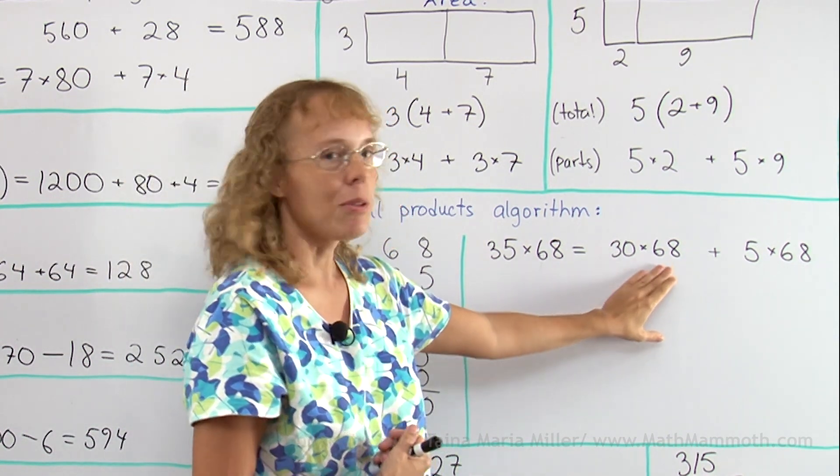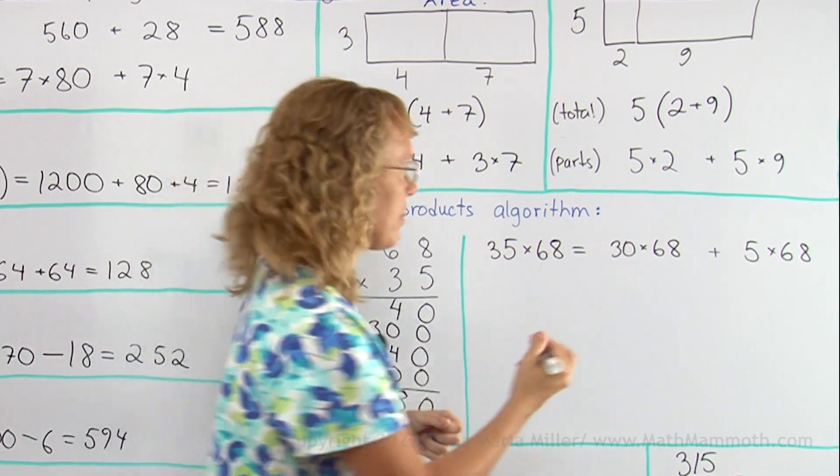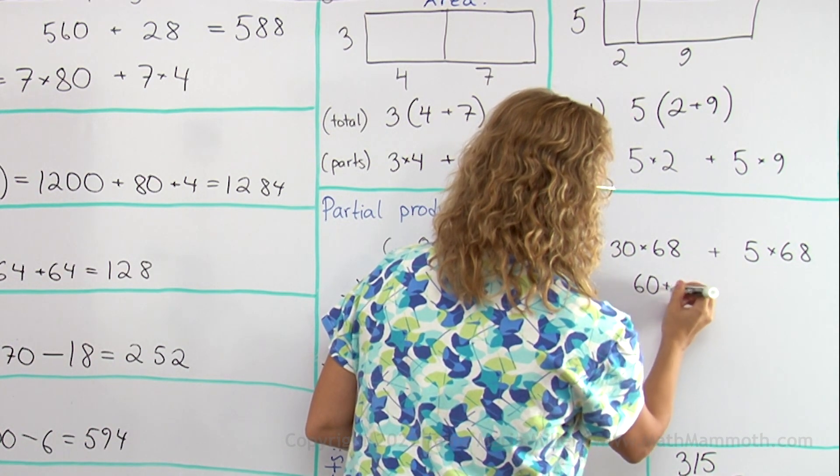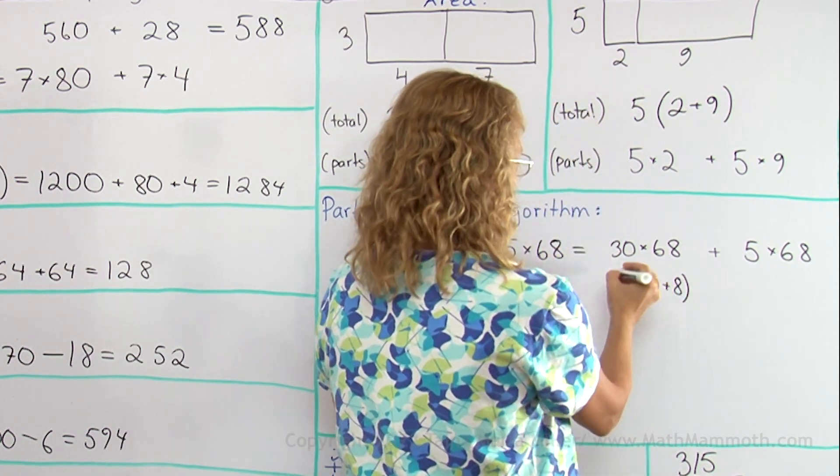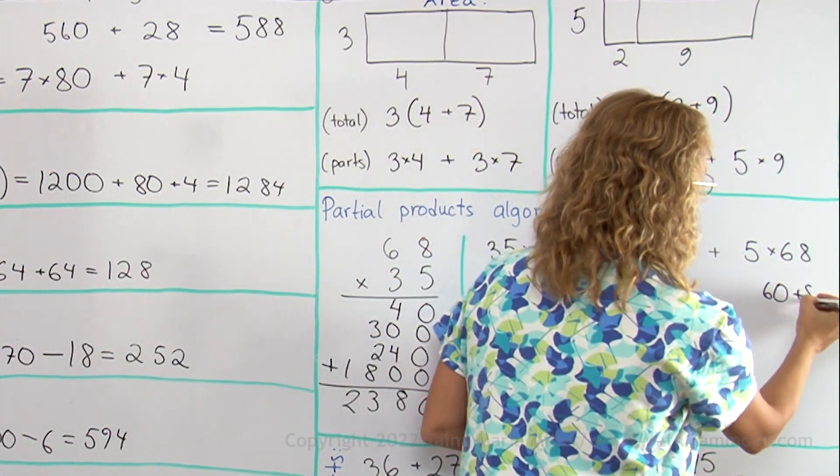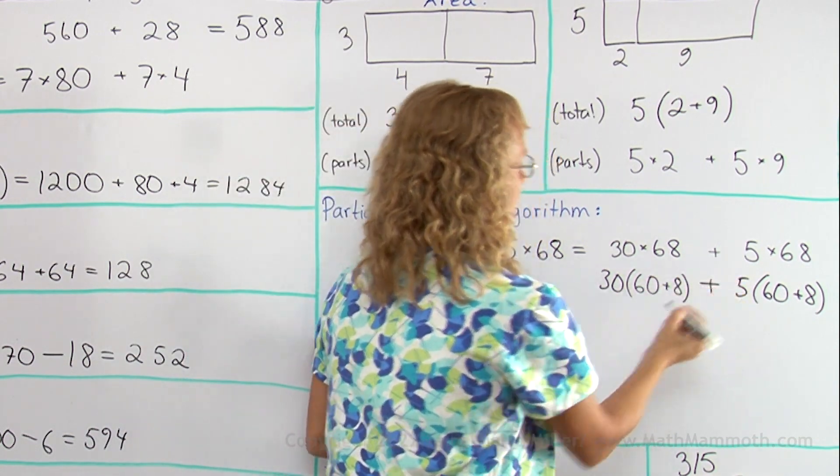And now, from here, we will break 68 into two parts and write it as 60 plus 8. So here, I have 60 plus 8 times 30. Here, I have the same 60 plus 8 times 5. And there's still the addition equation here.